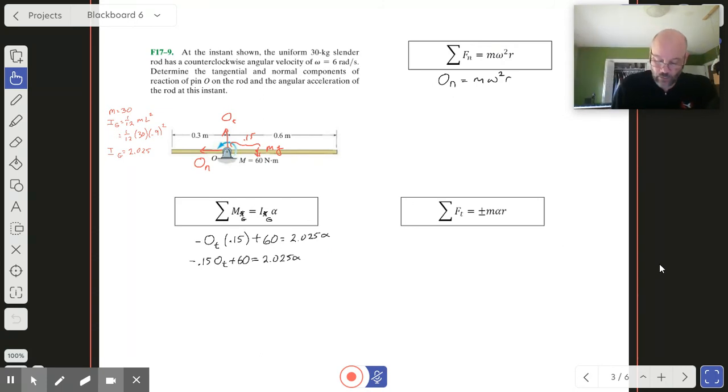On equals what we've got: 30 kg times an angular velocity of 6 rad/s squared, times our radius between the center of mass and the point of rotation, which is 0.15 meters. So On turns out to be 162 Newtons.